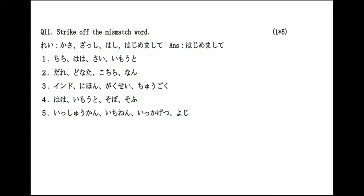The eleventh question is: strike off the mismatched word. Group 1 — chichi, haha, sai, imouto: strike off sai (father, mother, younger sister are family members). Group 2 — dare, donata, kochira, nan: strike off kochira (the others are interrogatives; kochira means 'here'). Group 3 — indo, nihon, gakusei, chugoku: strike off gakusei (the others are countries; gakusei means student). Group 4 — haha, imouto, sobo, sofu: strike off sofu (grandfather; the others are female family members). Group 5 — isshuukan, ichinen, ikkagetsu, yoji: strike off yoji (four o'clock; the others indicate duration).